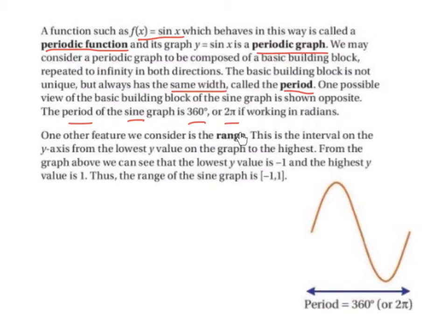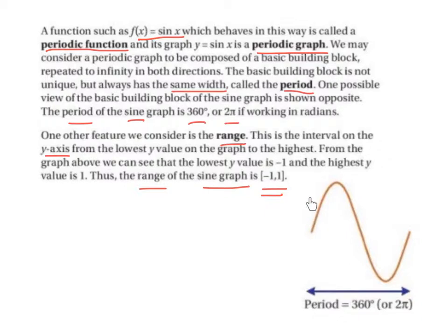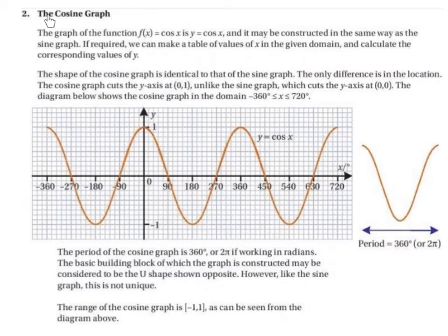One other feature we consider is the range. This is the interval on the y-axis, from the lowest y value on the graph to the highest. From the graph, we can see that the lowest y value is minus 1 and the highest y value is 1. Thus, the range for the sine graph is minus 1 to 1. The period is 360 degrees or 2pi, and then it starts to repeat itself. The range goes from 1 down as far as minus 1.